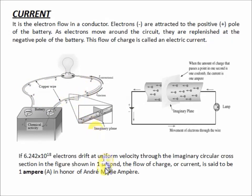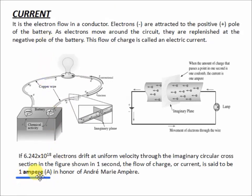In one second, the number of electrons that flow is equal to 6.242 times 10 to the 18 electrons. That amount of electrons is equivalent to 1 Ampere. The unit for current is Ampere, named in honor of the scientist who invented it — André-Marie Ampère. So, in his honor, the unit of current is Ampere.